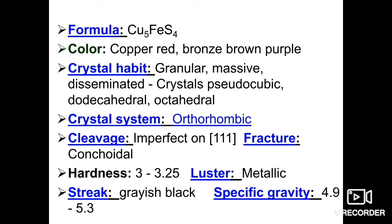Fracture is conchoidal. Hardness is 3 to 3.25. Luster is metallic. Streak is grayish black. Color is copper red or bronze brown purple, but the streak is grayish black. So when the color and the streak of a particular mineral are not the same, they become the basis of identification in the field.